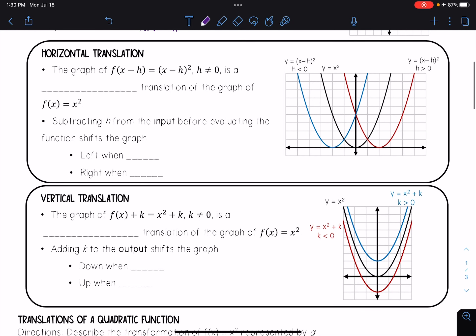One transformation that we can do with quadratic functions is translations. We see that the graph of f(x - h), which equals (x - h)², where h ≠ 0, is a horizontal translation of the graph of f(x) = x². Here we are subtracting h from the input before evaluating the function, and it shifts the graph left when h < 0 and right when h > 0.